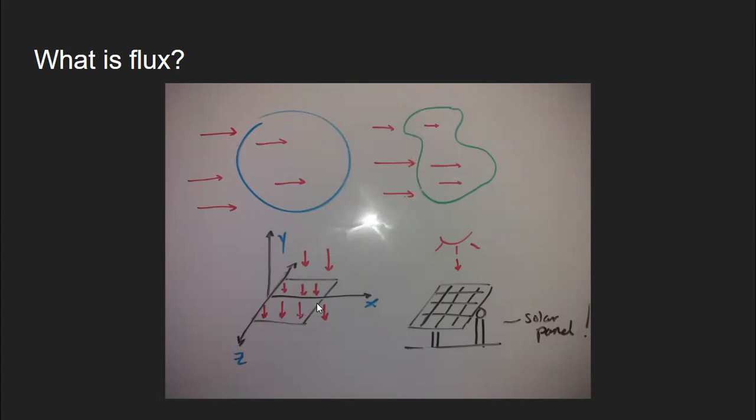And in this diagram of the three axes, we have a rectangular area with vectors pointing in the negative y direction. The flux of this plane is the amount of vectors passing through that area, and this is similar to a solar panel where these light rays are the vectors passing through the area of the solar panel.